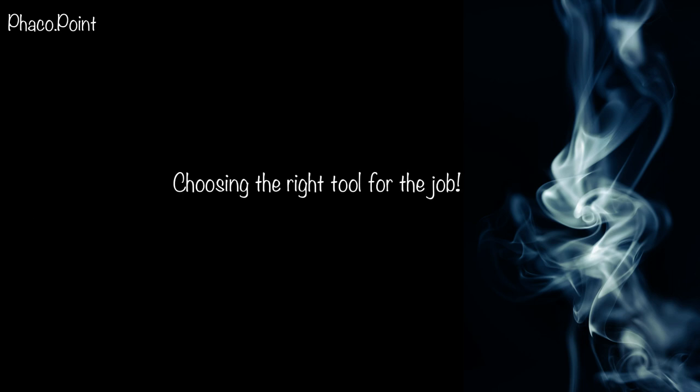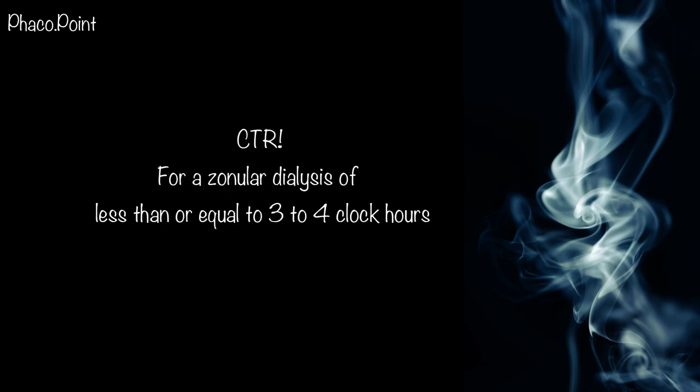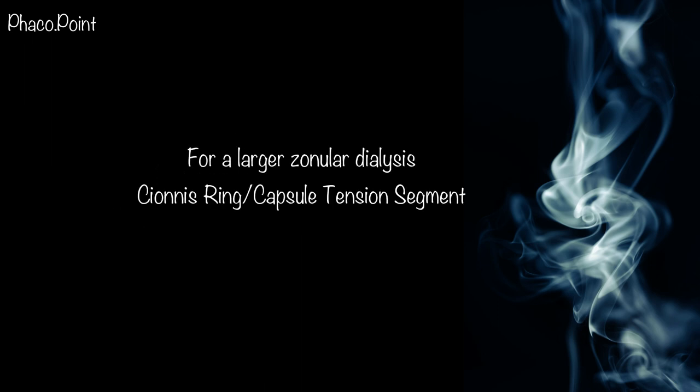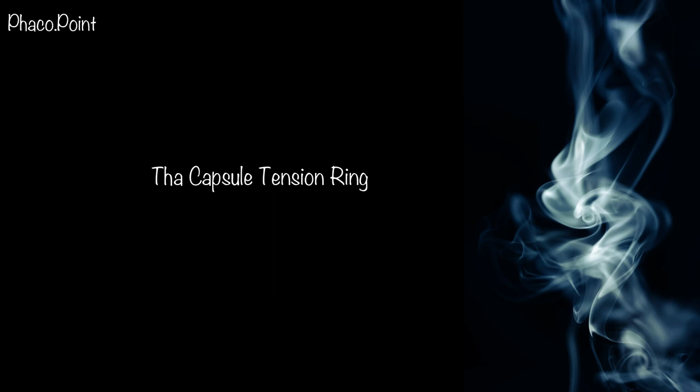The capsule tension ring can be used to give adequate stability in a patient with a localised zonular weakness of about 3 to 4 clock hours. If faced with a zonular dialysis larger than 3 or 4 clock hours, you would require a scleral fixated capsule tension ring or segment to provide adequate stability. Let's now discuss a few aspects of this capsule tension ring.